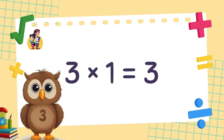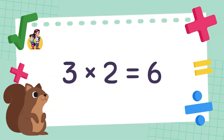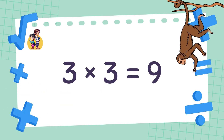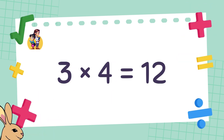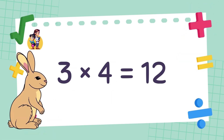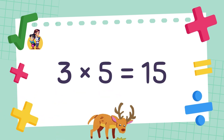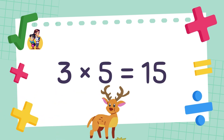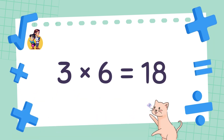3 times 1 is equal to 3. 3 times 2 is equal to 6. 3 times 3 is equal to 9. 3 times 4 is equal to 12. 3 times 5 is equal to 15. 3 times 6 is equal to 18.